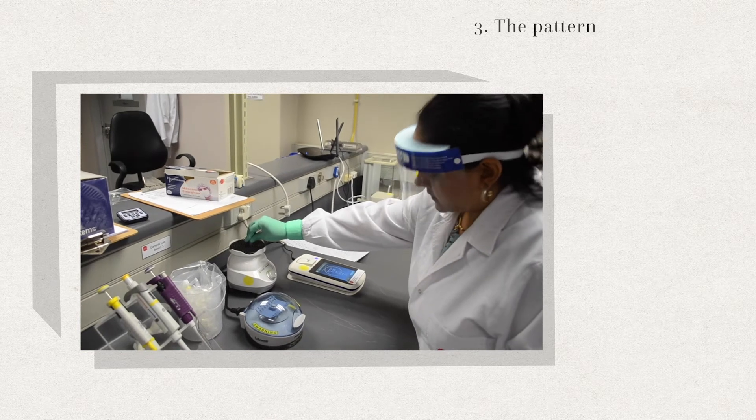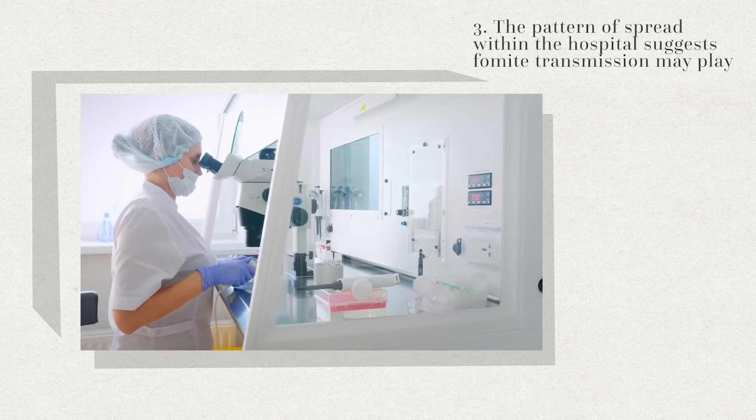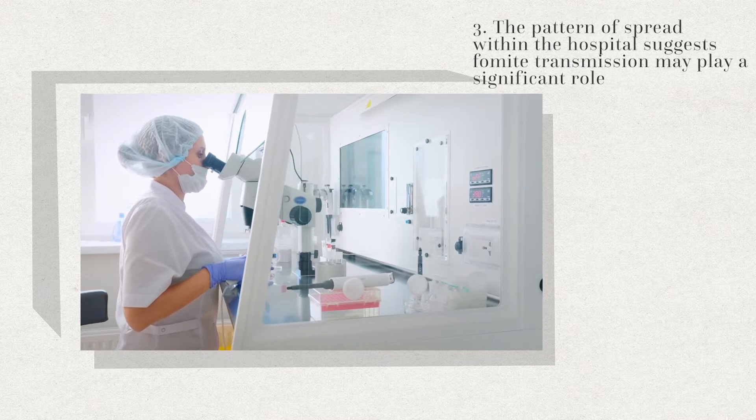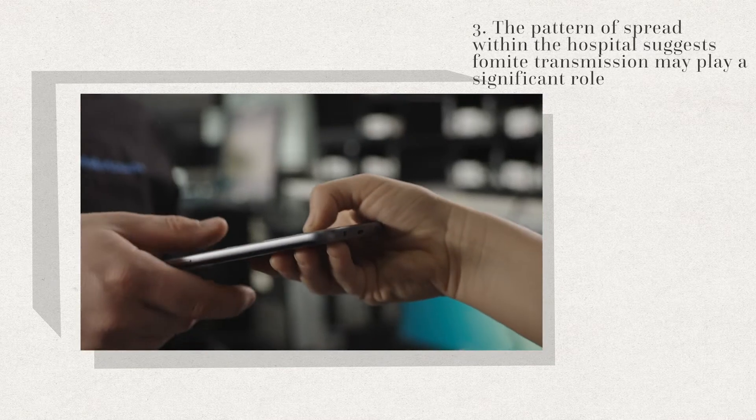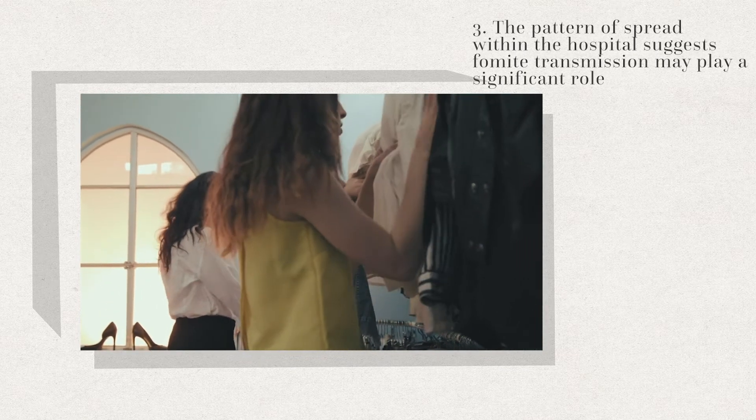Number three, the pattern of spread within the hospital suggests fomite transmission may play a significant role. This is the spread of the virus through shared objects, on clothing or on furniture, making it harder to track.